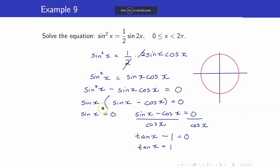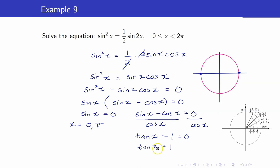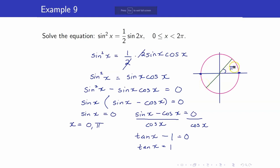First, let's solve the values of x for which sine x equals 0. Sine refers to the y-coordinate, so that means you are at y equals 0 on the unit circle. Hence, x equals 0 or pi. Next, for tangent x equals 1, the special angle whose tangent is equal to 1 is pi over 4. We have two angles — one in quadrant 1 and one in quadrant 3 — both with reference angle pi over 4. So x equals pi over 4, and the other is pi plus pi over 4, which is 5 pi over 4.